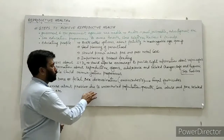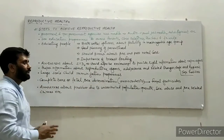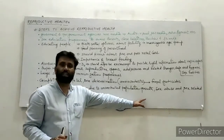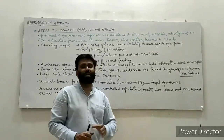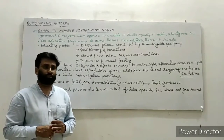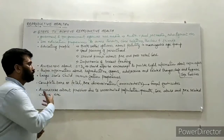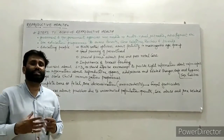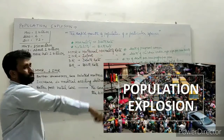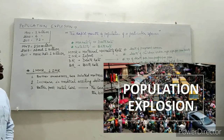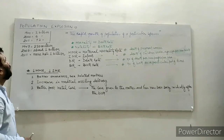Awareness about problems due to uncontrolled population growth, sex abuse, and sex-related crimes is essential. Population explosion means the rapid growth of population of a particular species. In humans, rapid growth in population in a particular area is called population explosion. For example, at the start of the 19th century, two billion people were in the world; by 2000, it became six billion; by 2011, seven point two billion.